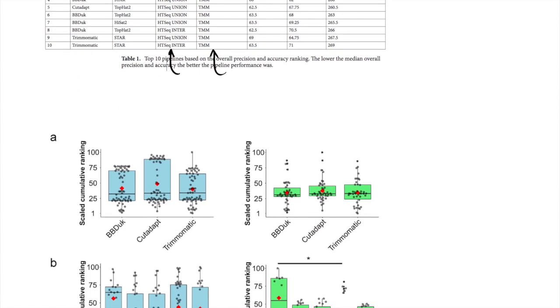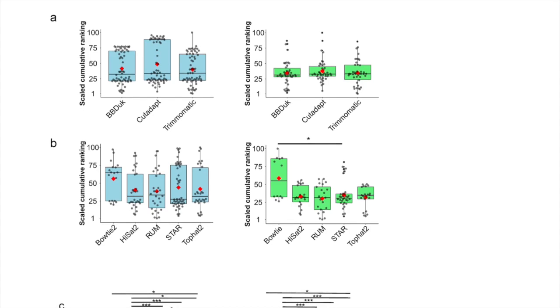And then they created graphs for all of the different, when you look at the 192 pipelines, when you look at all of the pipelines that include a particular adapter cutting, trimming software, and you look at all of the rankings for all of the pipelines that included that one, where did they tend to fall. And you can see that including all of the pipelines for these different softwares, that there really wasn't a statistically significant difference across the adapter cutting, across the trimming step.